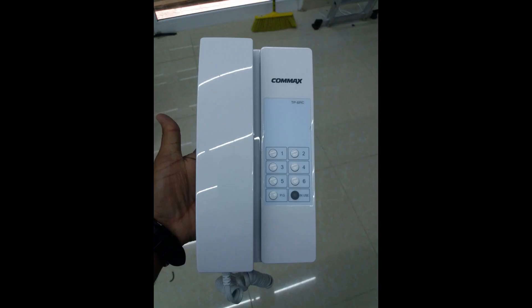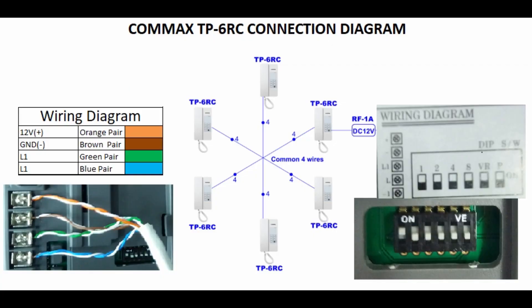Now we have the brand Commax TP-6RC with us. This is the one which we are going to make an intercom. So what is intercom? That means two or more of the same device we can connect within a single network. We will loop together and we will make the same power also.